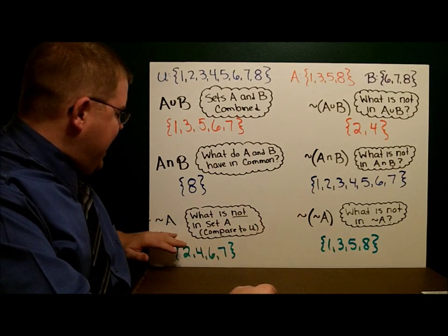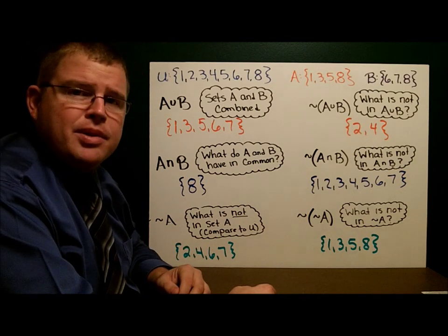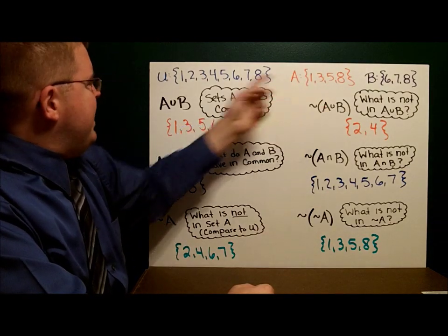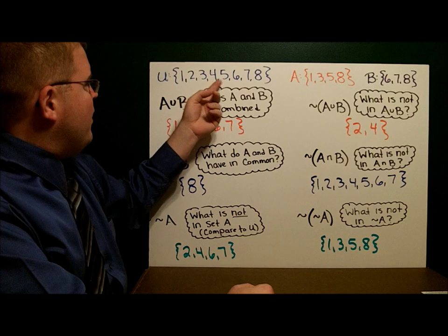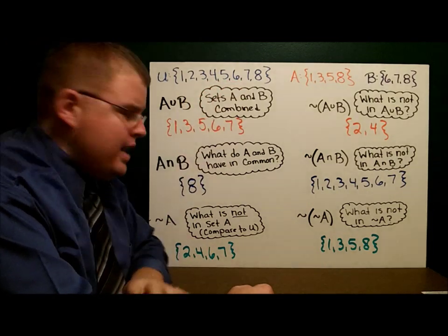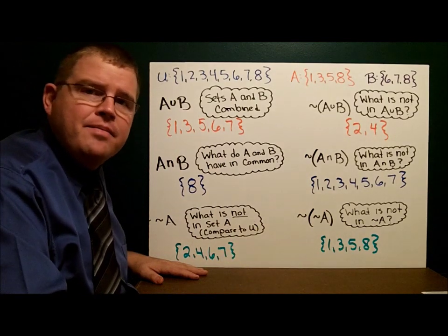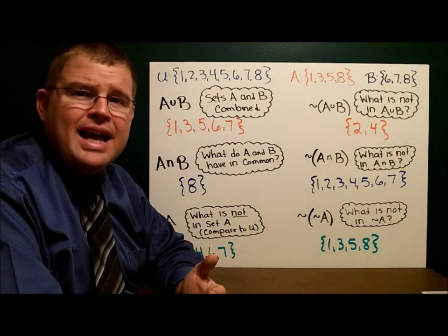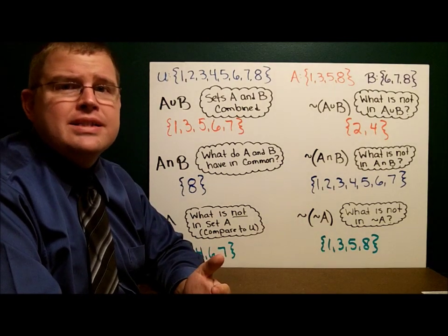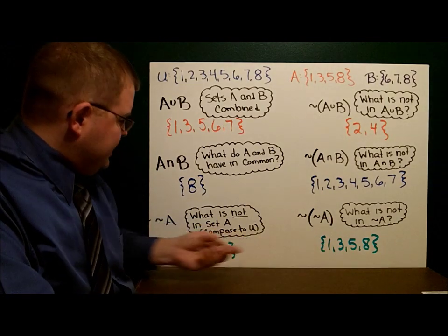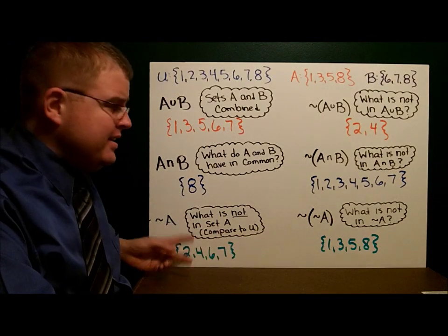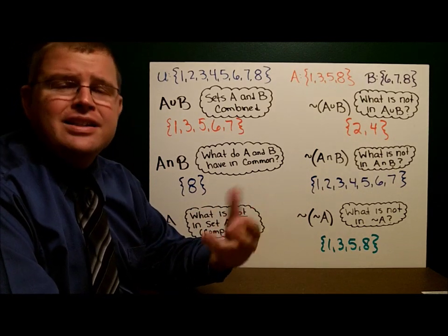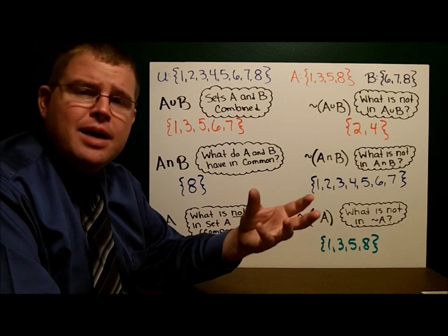Finally, not A. What is not in A? What is the complement of A? And we compare it to the universe. A has 1, 3, 5, 8. That leaves us 2, 4, 6, and 7 that are not in set A. So that's the complement of set A. Lastly, not not A sounds like a double negative, right? And it is. What is not in not A? What is not in here? 1, 3, 5, and 8. Not not A is a double negative. It simply means the same thing as A. Just like it would in English or a double negative in arithmetic.